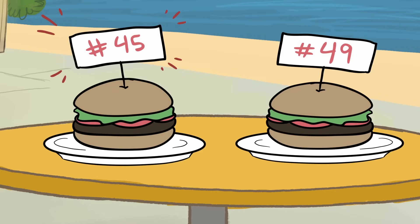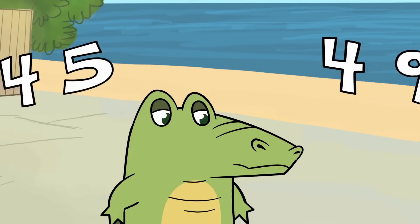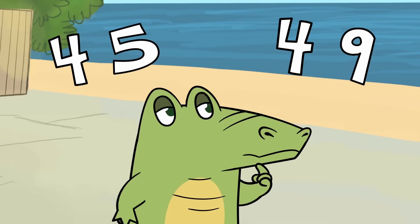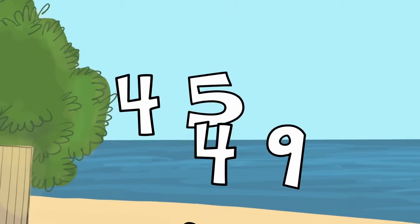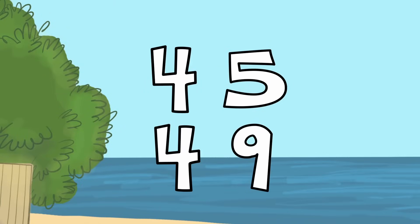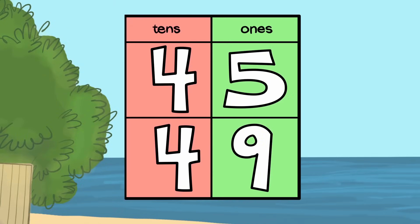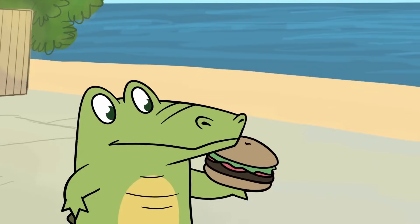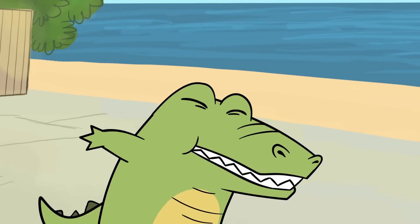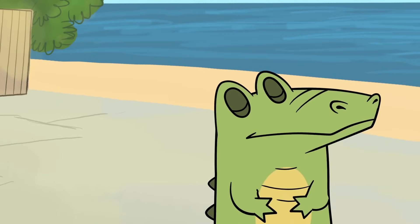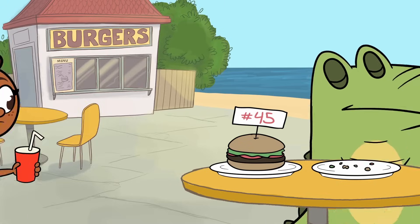45 and 49 — the Gator needs the greater value on the number line. He looks at the place values from left to right. He finds the greatest ones place, so he takes a big bite.